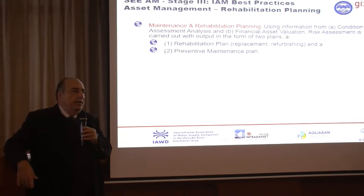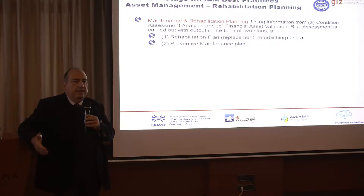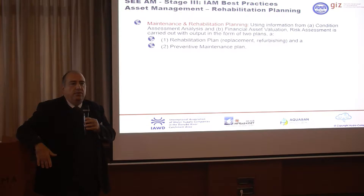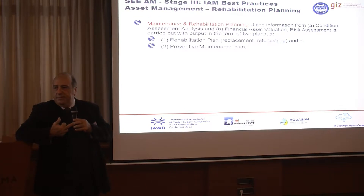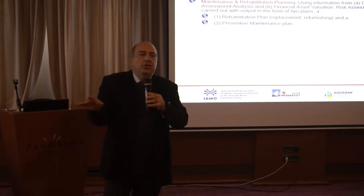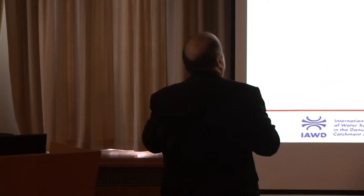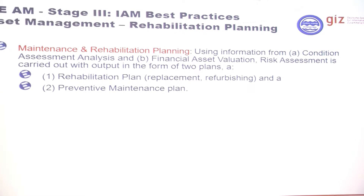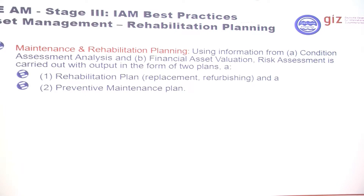Some people say rehabilitation planning is the heart of asset management. If you go in the books and bibliography, this is true asset management. Rehabilitation planning is the real asset management in practice. In stage 3, we're addressing rehabilitation planning, which includes three parts: condition assessment, financial asset valuation and amortization, and risk assessment. At the heart of asset management is risk assessment — you have to address risk of breakdown. The purposes are: minimize the cost of ownership, minimize the risk of failure, improve the level of service, and sustain the infrastructure in working conditions.